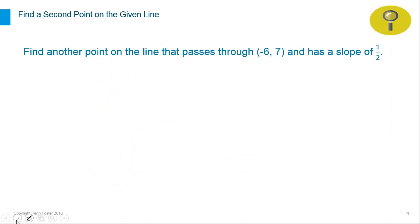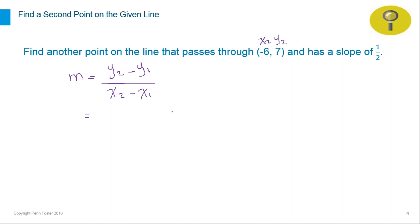Next question: find another point on the line that passes through the point (negative 6, 7) and has a slope of one half. The same way we did the last question, let's rewrite the formula: y2 minus y1 over x2 minus x1. Let's label the points so we don't get mixed up. y2 in this case is 7, and x2 is negative 6. The slope is already given as a fraction, so we use it as is: one over two.